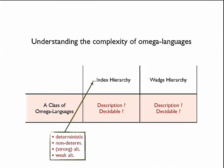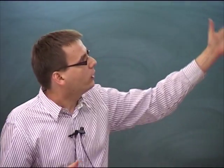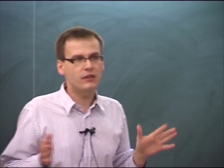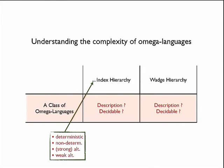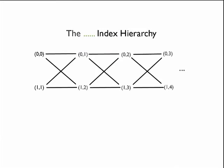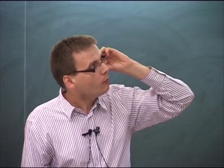The index hierarchy comes in different flavors depending on which automata you use: you can ask about deterministic index, nondeterministic index, alternating, weak alternating, etc. Sometimes the answer is impossible — if you take a language that is not weakly recognizable and ask about the weak alternating index, the answer may be: no chance. The classes form a hierarchy: if you take languages recognized by [0,2] automata and take complements, you get the class recognized by [1,3] automata.